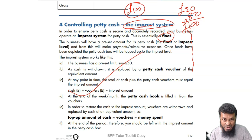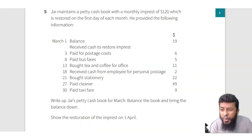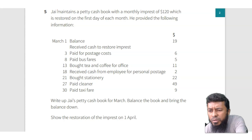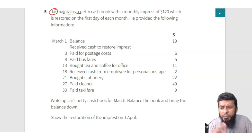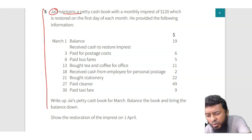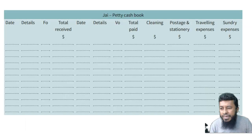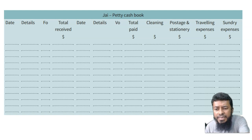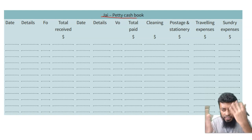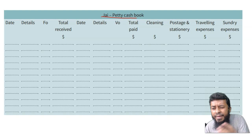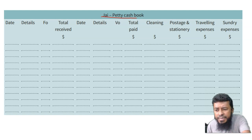Now let's do real accounting work from Cambridge IGCSE. There is a particular question from a person called Jay who maintains a petty cash book. Before reading the question entirely, let me show you what a petty cash book looks like. This is the layout — it's Jay's petty cash book as a heading at the top, and it has two sides: the debit side and the credit side.